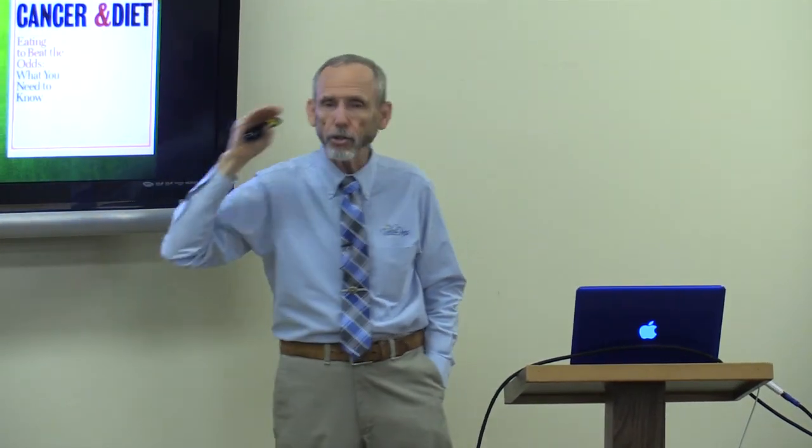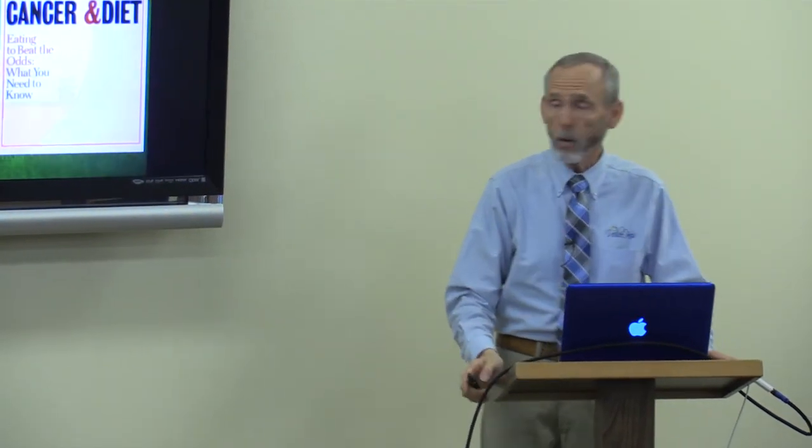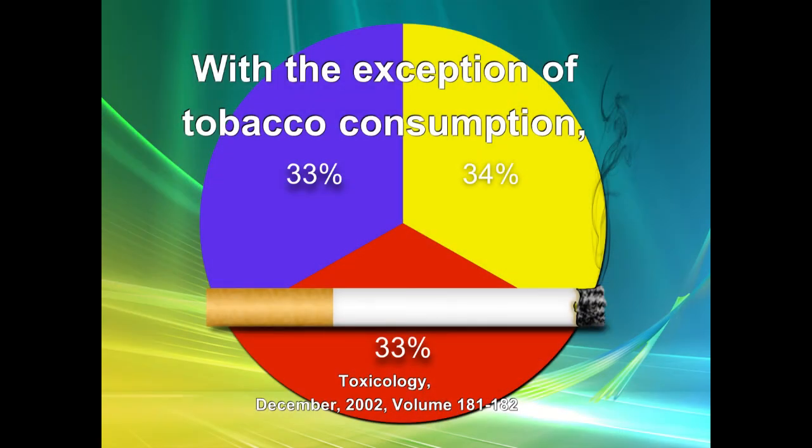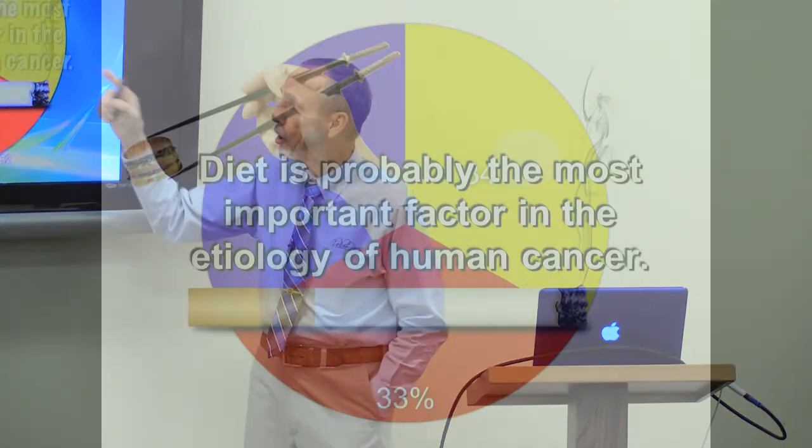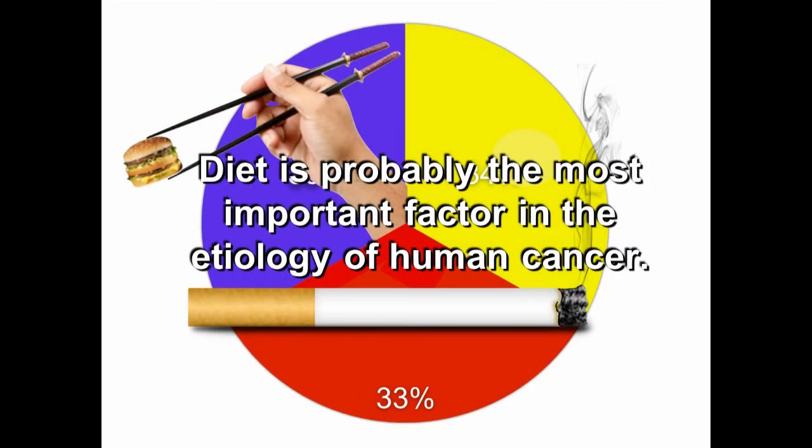One-third of all cancers are caused by tobacco — and that's good news, because if you don't smoke, you just cut your risk by a third. Another third is caused by improper diet. That's also good news. If you're eating a good plant-based, whole-food vegetarian diet, you cut your risk by more than two-thirds, because now the food becomes your medicine. As Socrates said: let your food be your medicine, and your medicine be your food.